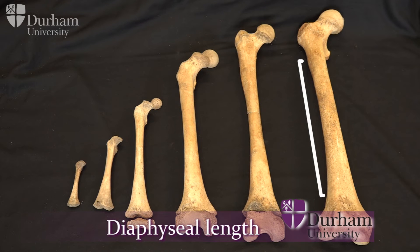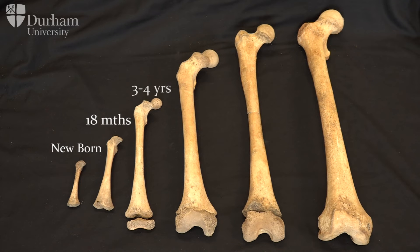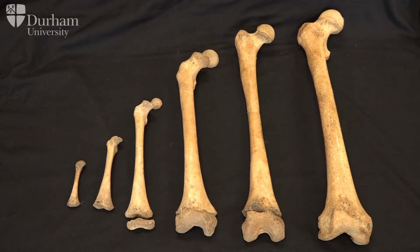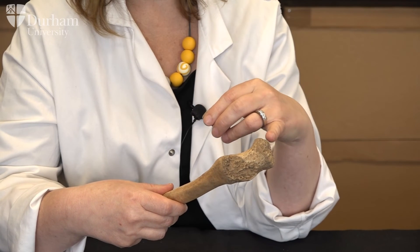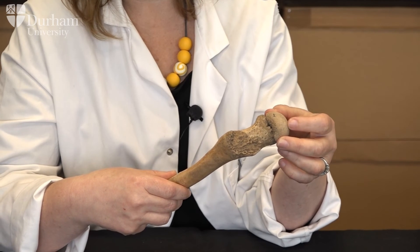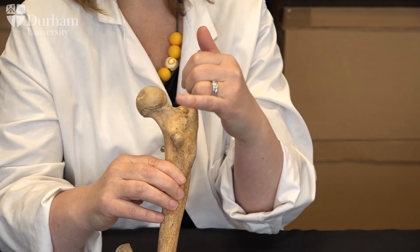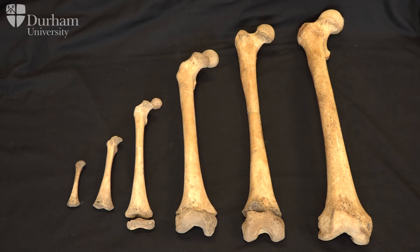Long bone growth, measured as diaphysial length, is useful for estimating age at death, particularly of younger individuals. Going from left to right, these individuals are a newborn, an 18-month-old, a 3 to 4 year old, an 8 to 9 year old, a 16 to 17 year old, and an adult. When measuring the long bones we focus on the diaphysial length, not including the ends of the bones or epiphyses. During growth you have unfused epiphyseal surfaces at the ends — very wavy — and a separate epiphysis. When growth stops, this fuses onto the end of the bone. Once the bones start to fuse, as in this instance where the proximal end of the femur has fused, the bone no longer yields a useful measurement.